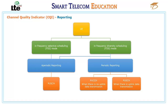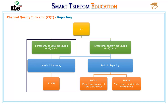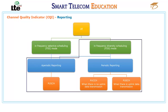CQIs can be reported periodically or aperiodically. For a UE in frequency selective scheduling mode, the E-NodeB selects a periodic CQI reporting, and the reporting modes are specified in uplink scheduling; CQIs are reported over the PUSCH. For a UE in frequency diversity scheduling mode, the E-NodeB selects periodic or aperiodic CQI reporting. In periodic mode, when there is no uplink data transmission, CQIs are reported over the PUCCH. When there is uplink data transmission, CQIs are reported over the PUSCH.